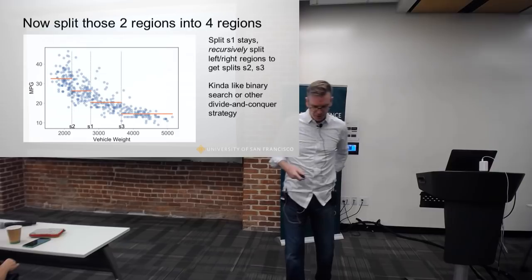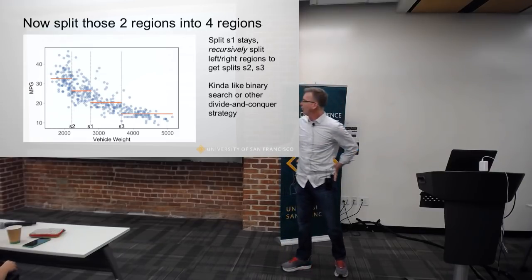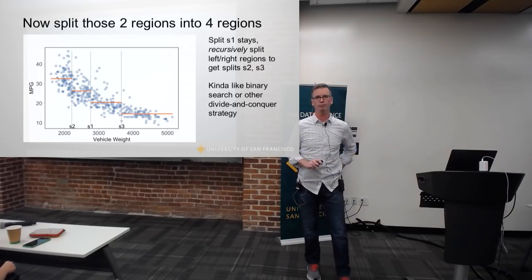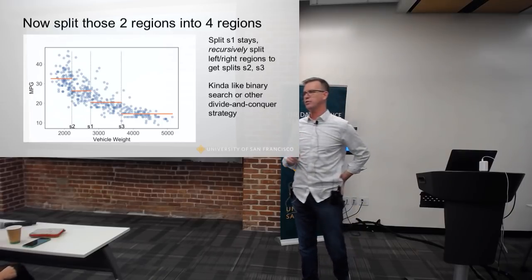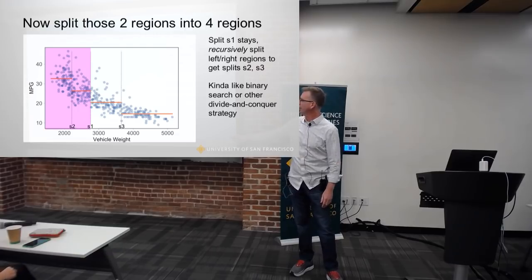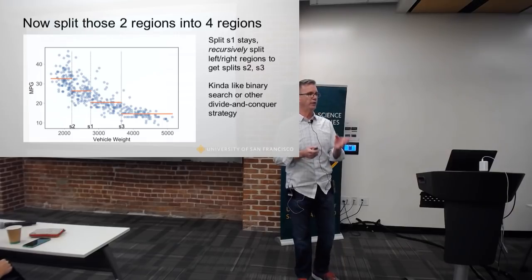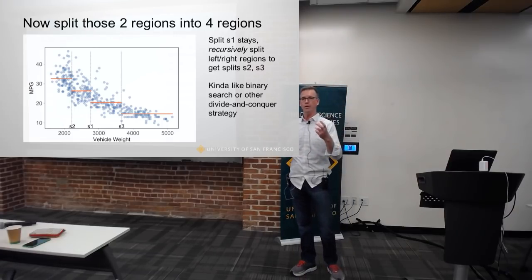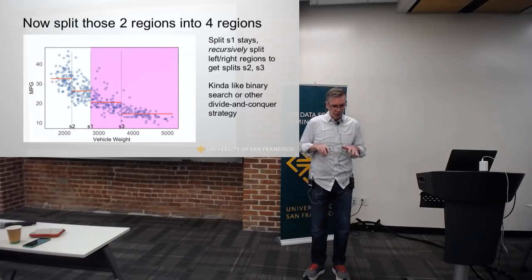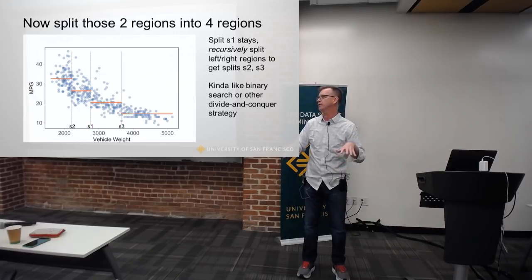In a divide-and-conquer strategy, once I've broken the space into two sub-regions, I can break those regions into sub-regions following the exact same procedure. I started with one split and I'm going to look at everything on the left and try to find a value that will improve the error measure. The same is true on the right-hand side. The key is that I'm starting out and recursively spreading out to partition this space into finer and finer chunks.